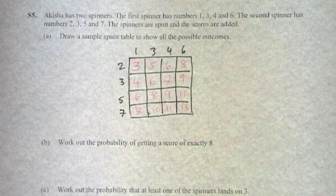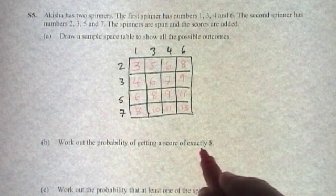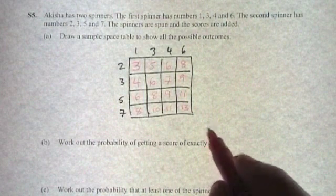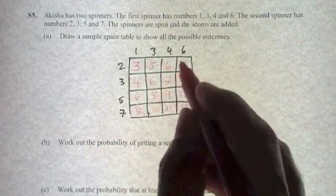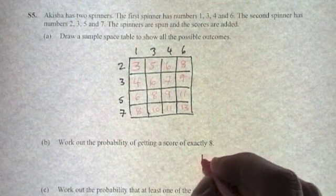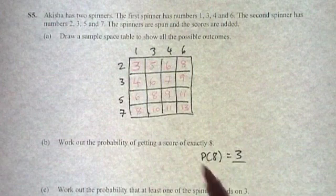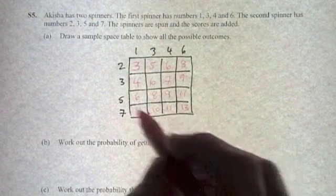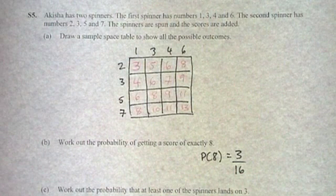The next question says work out the probability of getting a score of exactly 8. Now how many times did we get exactly 8 here? That's 1, 2, 3 times. So the probability of 8 equals 3 divided by, and we know there's a total of 16 scores there. So that's 3 divided by 16 and we can leave that as a fraction and that will not simplify.